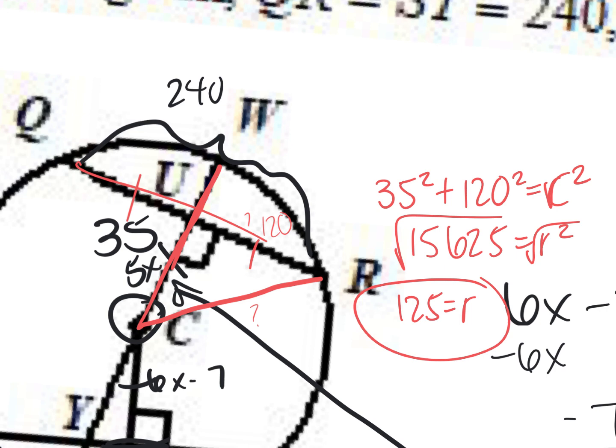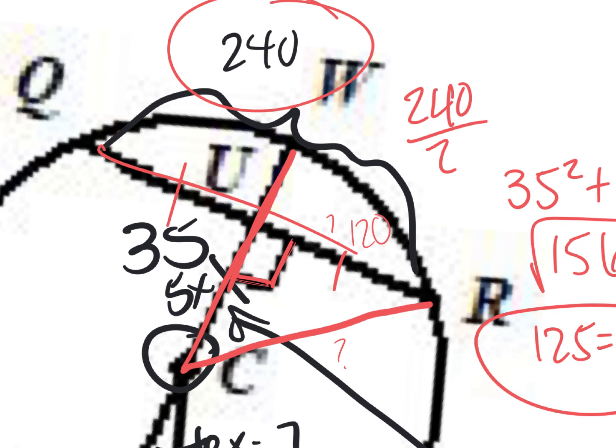Where did the 120 come from? The length of the chord is 240, and 240 divided by 2 equals 120. A right triangle has to have a 90-degree angle — the two lines were already perpendicular, which was given in the problem. And whenever you draw a radius or diameter perpendicular to a chord, it always cuts the chord in half, giving us 120.